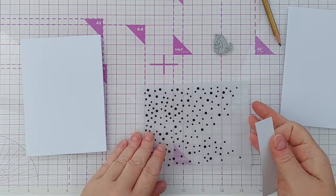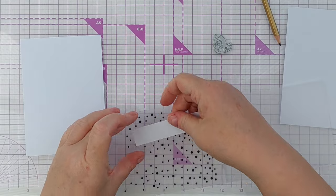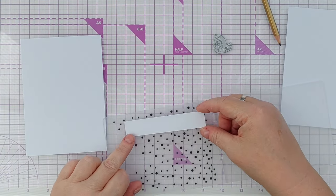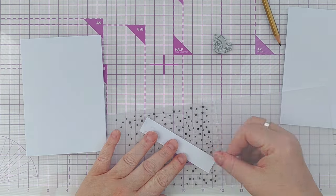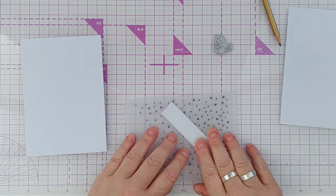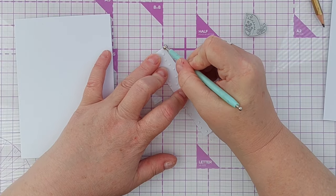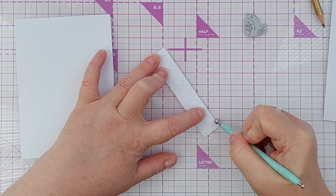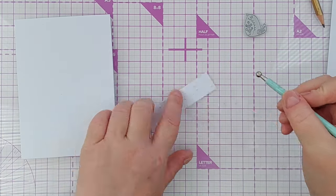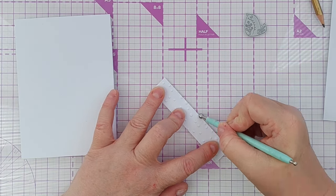Then I want to emboss some snowy texture on it, so I'm going to put this somewhere on here where it's going to pick up lots of these dots and run that through my Cuttlebug. There we have my little strip embossed with dots or snowflakes. I'm just running an embossing tool along the cut edge there to bevel it a bit so it looks like it's been die cut.